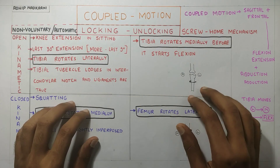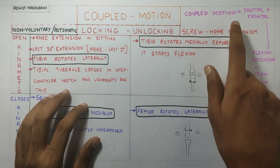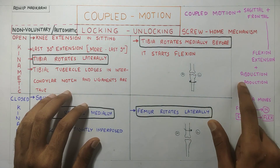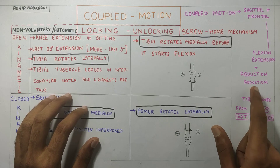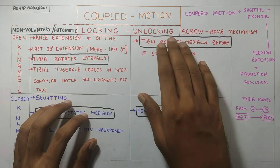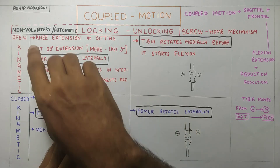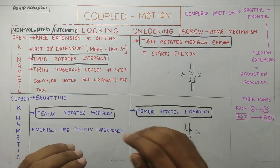To summarize, we talked about coupled motion — that is flexion and extension in the sagittal plane along with abduction and adduction — and we also talked about locking and unlocking, why it occurs, and how it varies with open and closed kinematic chain. If you like my content please share it with your friends. Don't forget to hit that subscribe button and let me know in the comment section what other videos you would like me to cover. Thank you for watching.